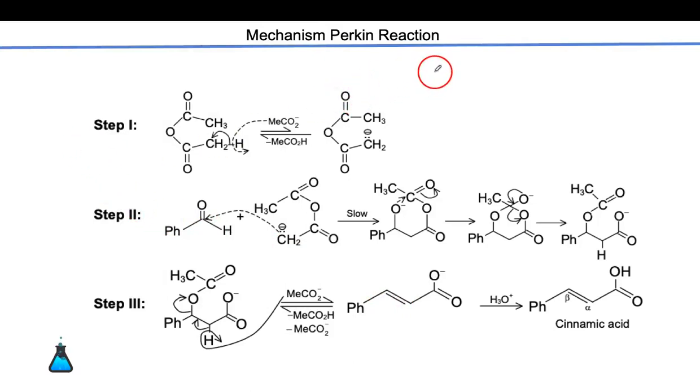I'm explaining the mechanism of Perkin reaction. The reagent I have taken is benzaldehyde, treated with acetic anhydride CH3-C=O-O-C=O-CH3 in presence of base CH3COONa. The final product of this reaction is cinnamic acid with the structure CH=CH-COOH.